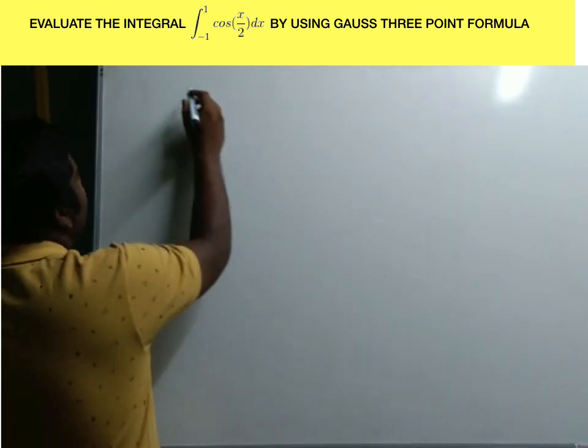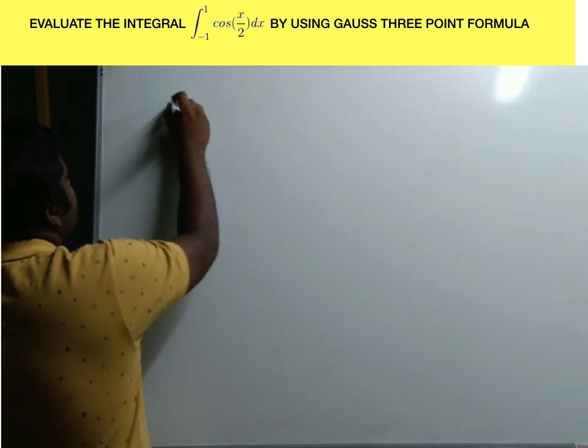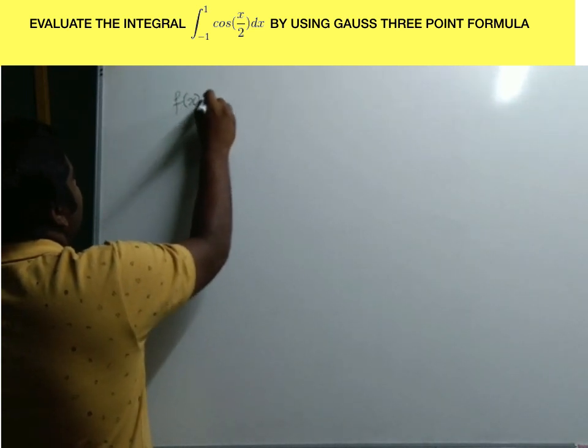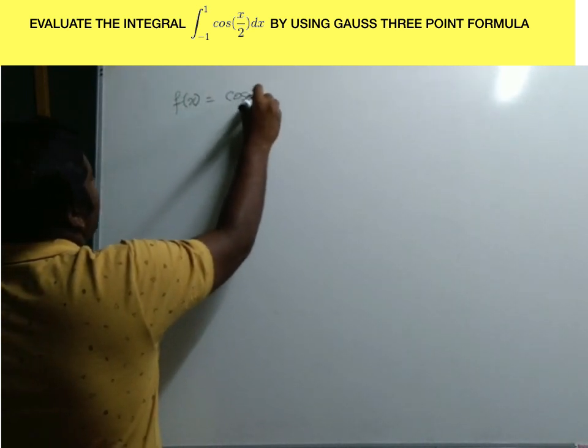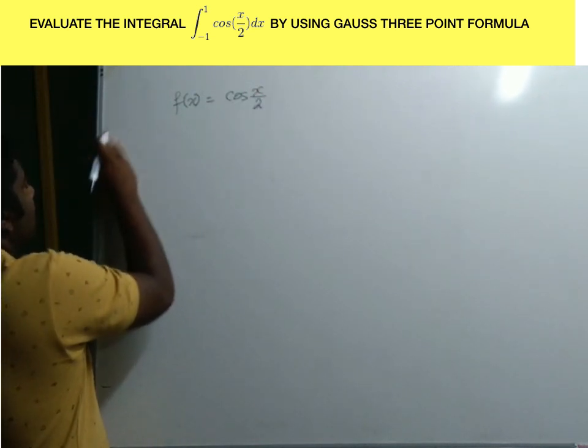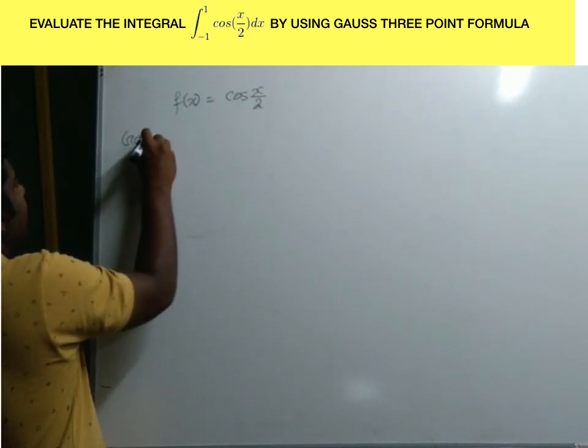So cos(x/2), therefore the function is f(x) equal to cos(x/2). And here we will solve using the Gauss 3-point formula.